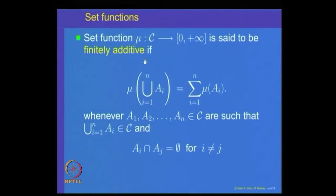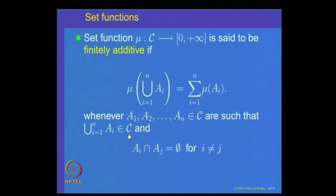Intuitively, keep in mind that mu in some sense denotes the size of a set A. So we are saying mu of the union equals the sum of the individual sizes whenever the sets Aᵢ are disjoint. We require this for any finite collection from i=1 to n. Such a property is called the finite additivity property of mu, or one says mu is finitely additive.